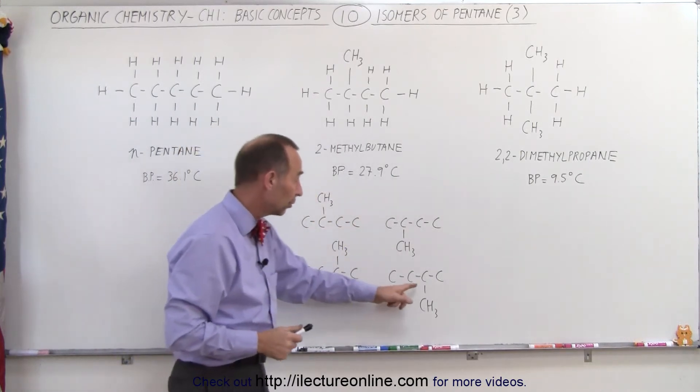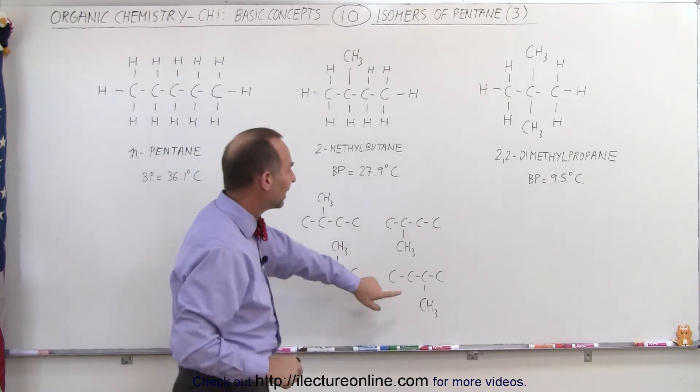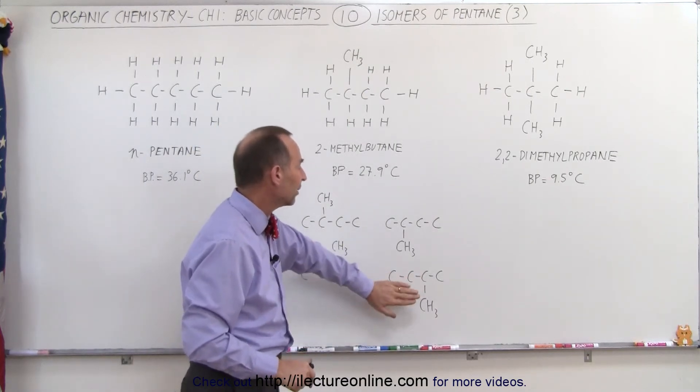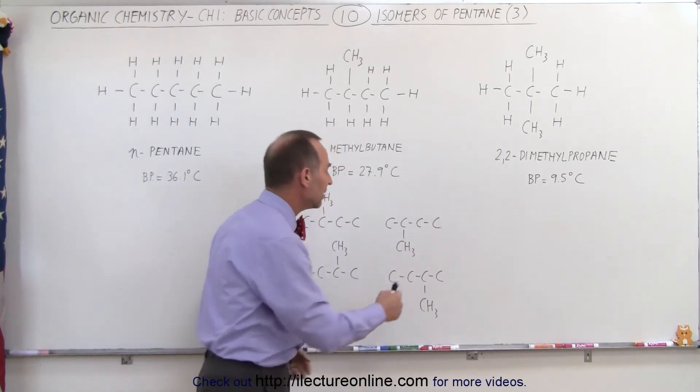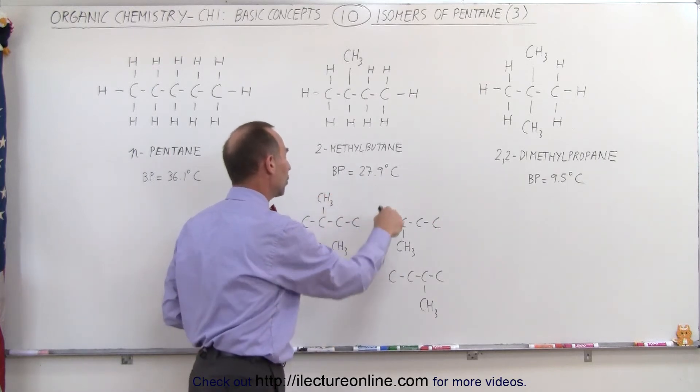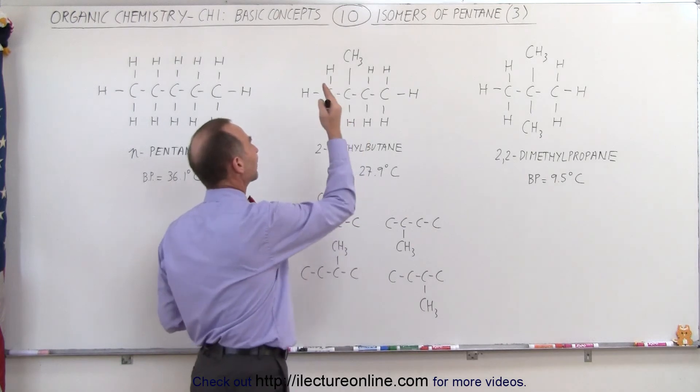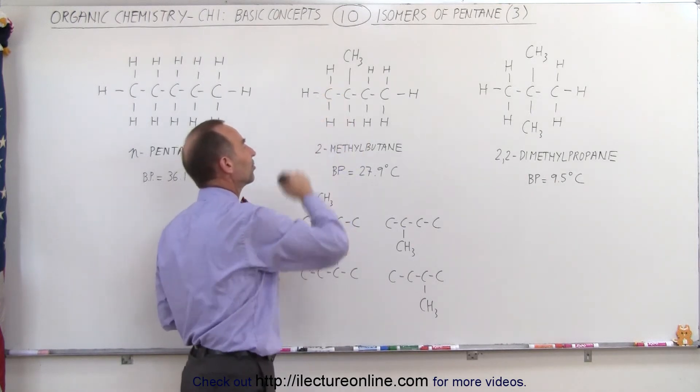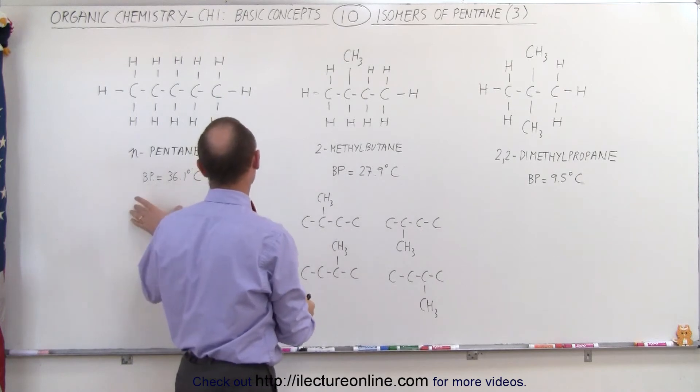Or if we had put it on the third carbon atom, again all you have to do is flip it over this way and then flip it over again and you end up with the exact same molecule as you had before. So it doesn't matter where you put the methyl group. In each case you have the exact same form, the exact same isomer. So this is only one additional isomer to the original isomer of n-pentane.